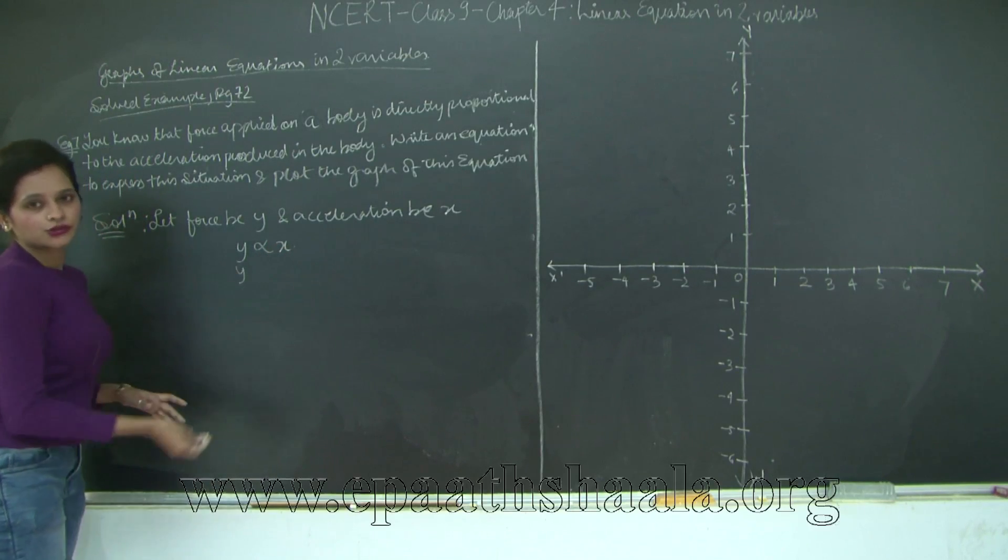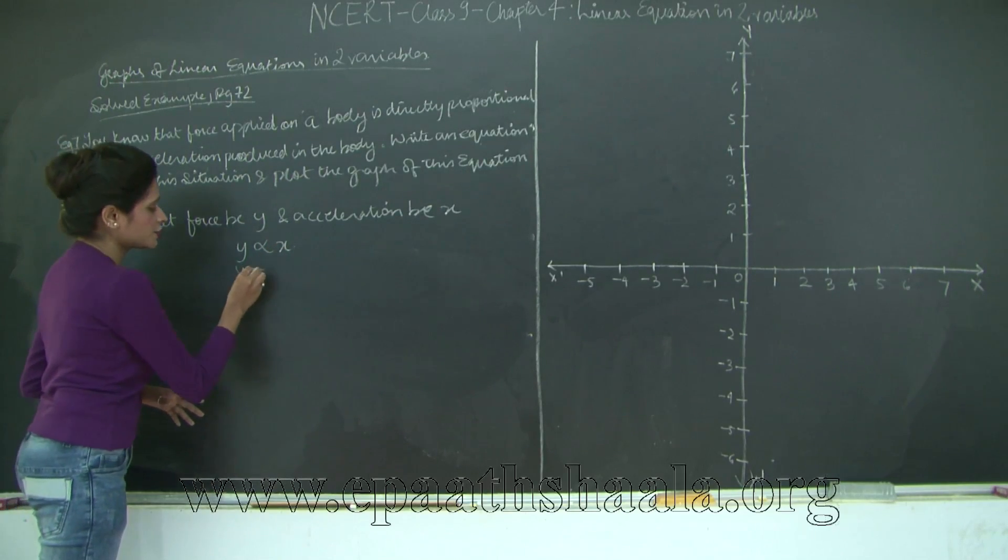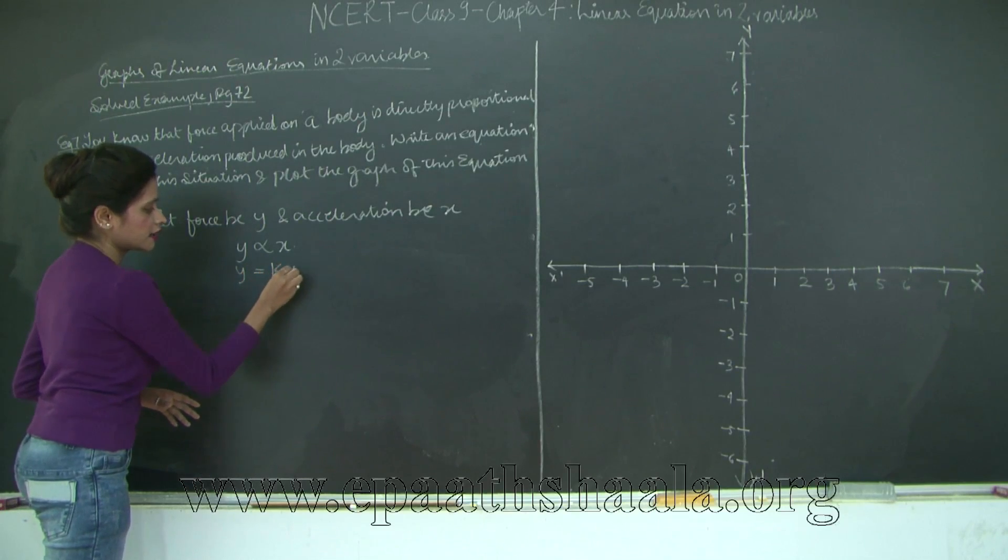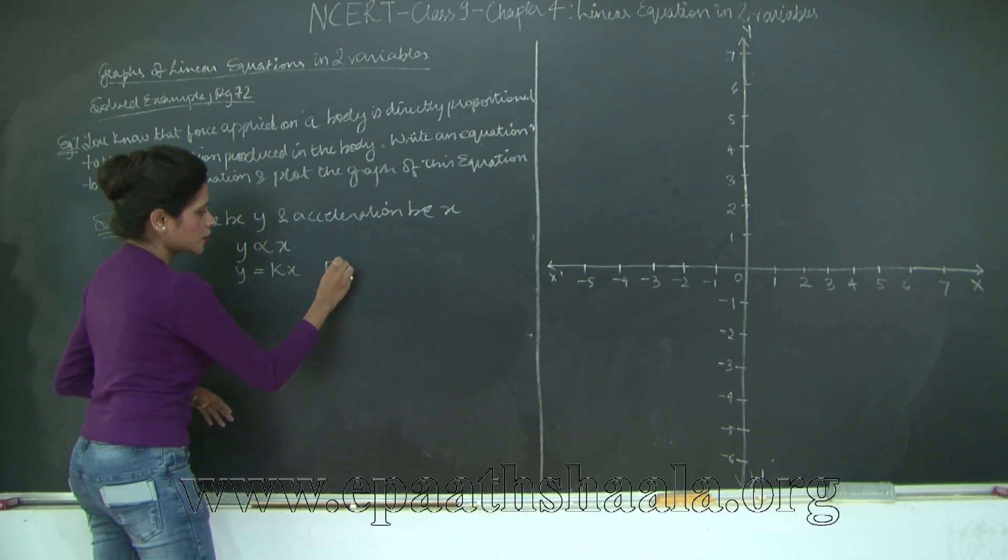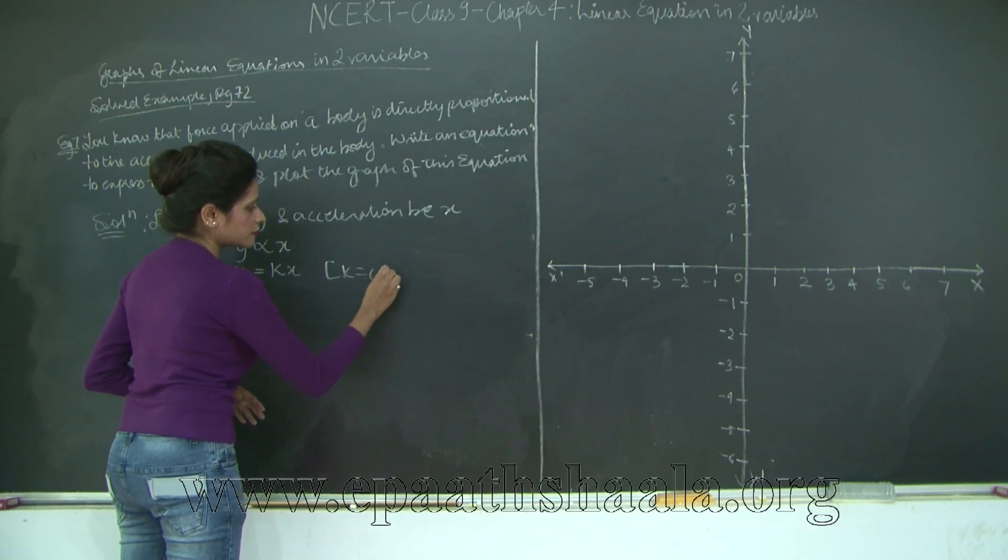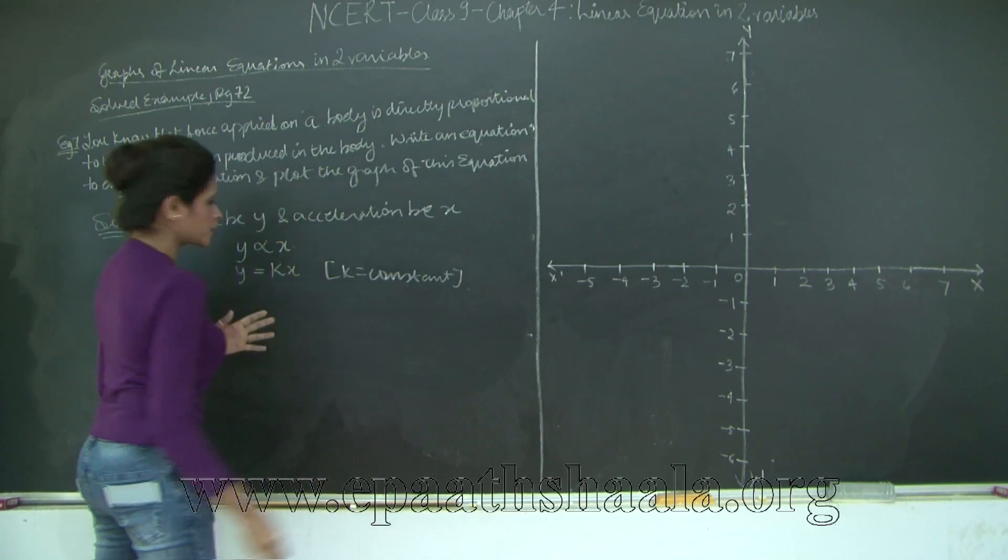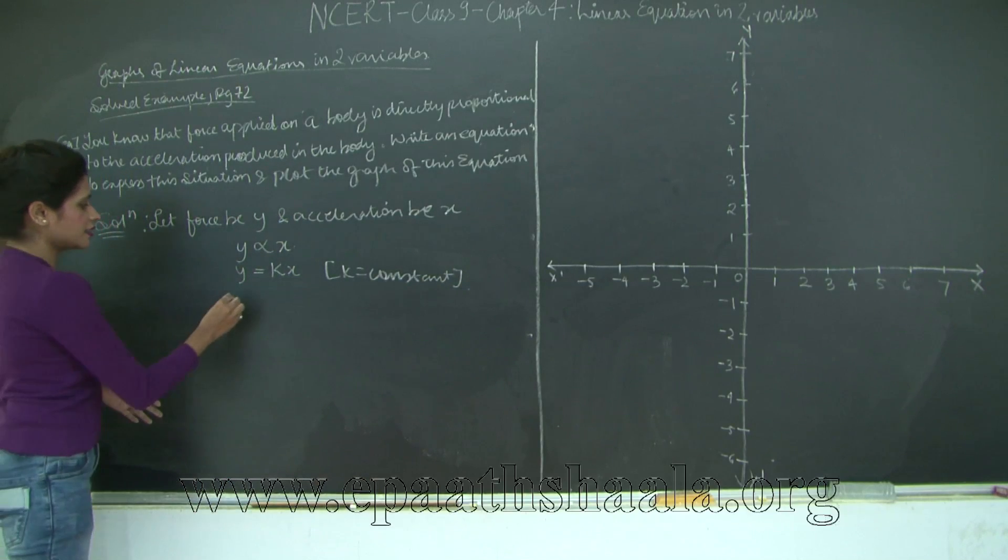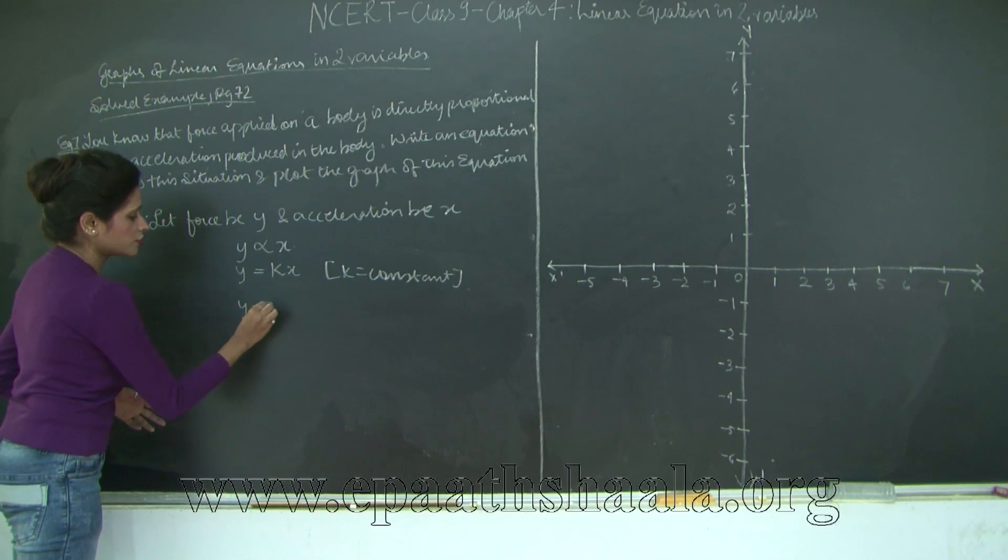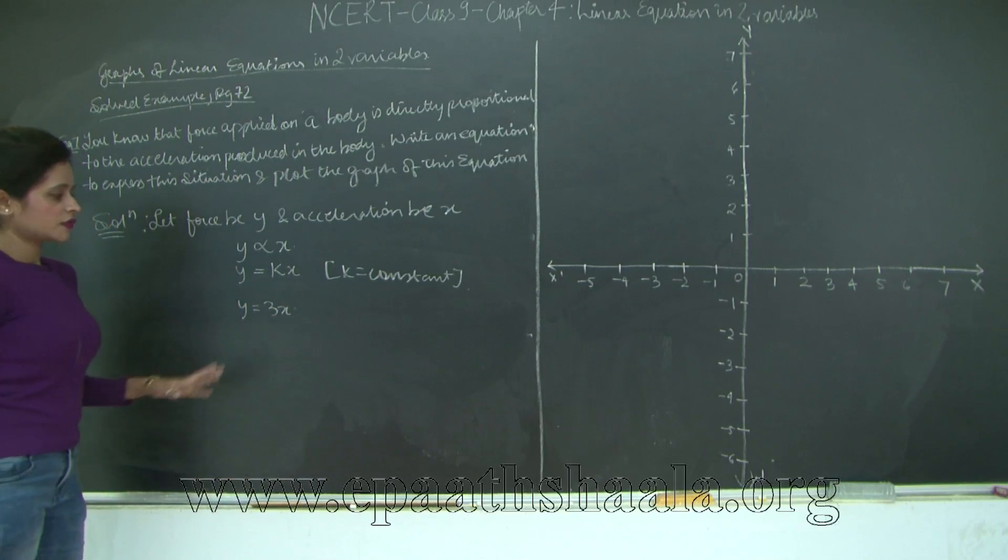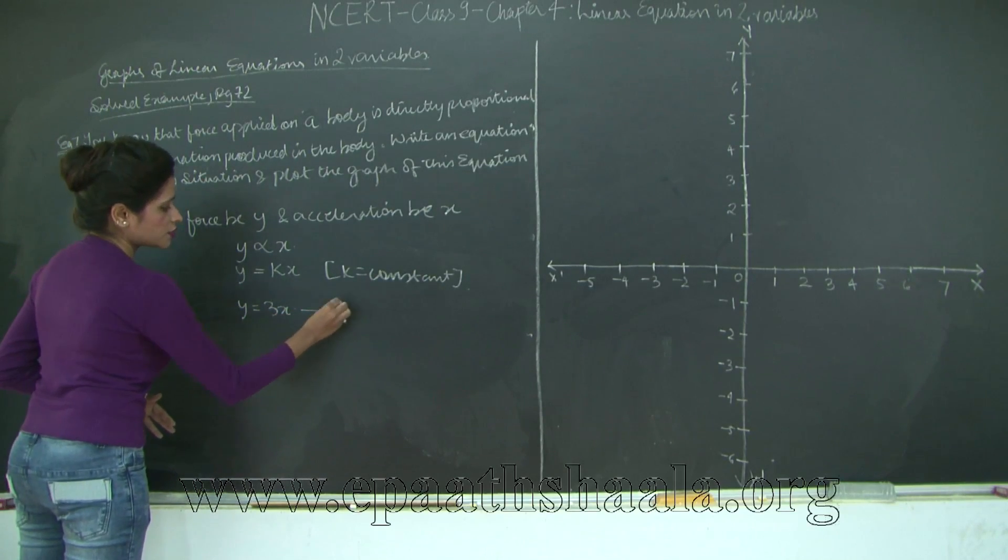Now to introduce an equal to sign, I will have to introduce a constant, let's say k. So this becomes y = kx where k is a constant. So k could be any value. Let's say if I say y is equal to 3x. So this is one such equation.